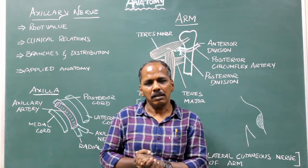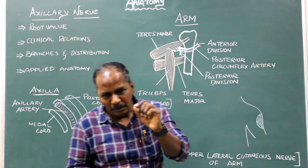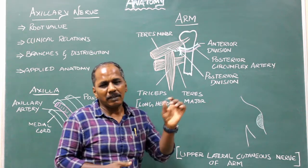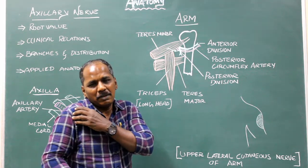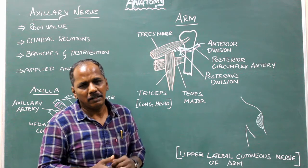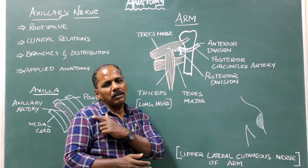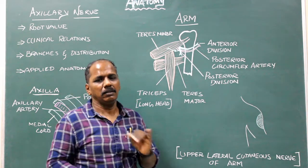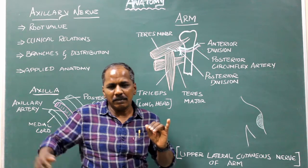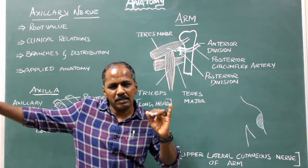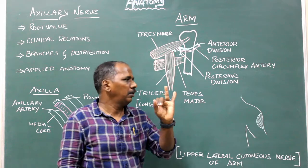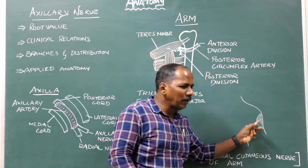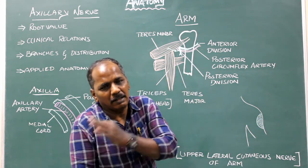Applied anatomy. Injury to the axillary nerve results in paralysis of the deltoid muscle, the chief muscle of the shoulder. This results in loss of contour of the shoulder region. Abduction of the shoulder is lost — abduction is not possible. There is also loss of sensation over the skin of the lower part of the deltoid region.